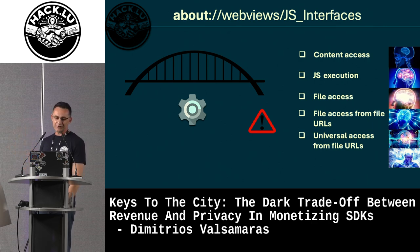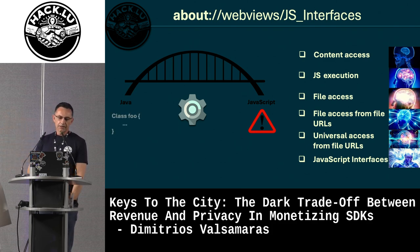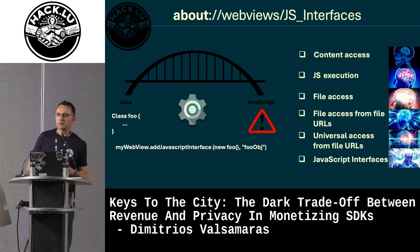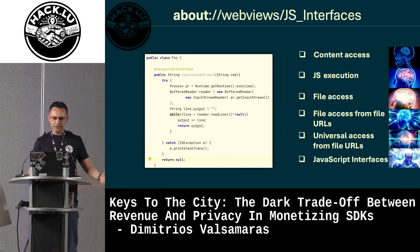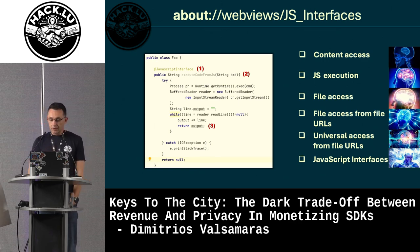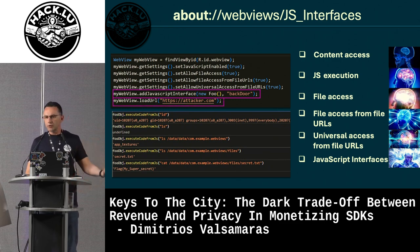Things can get worse with JavaScript interfaces, which bridge Java code from an app with JavaScript code loaded in the WebView. You inject a Java object into the WebView, give it a name, and it becomes accessible from JavaScript. For example, an `executeCodeFromJS` method — extreme, but possible — allows the JavaScript code to execute native code from within the WebView.